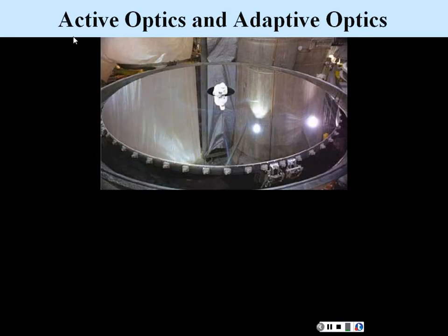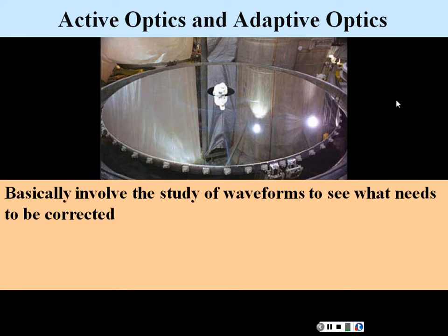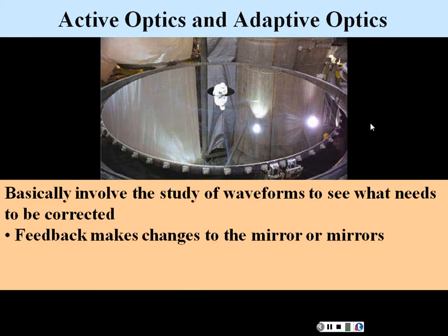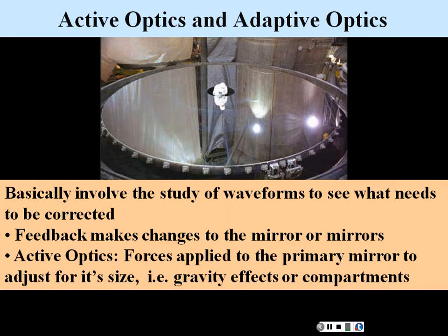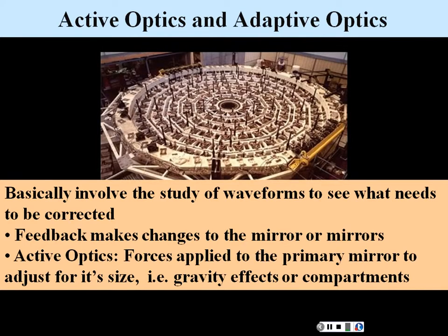Adaptive optics manipulates secondary mirrors and waveforms to account for atmospheric changes. Feedback changes the mirror shape. For active optics, it acts on the primary mirror — little force actuators on the back side of the mirror can move and reshape it from behind. Most of the time when we talk about manipulating waveforms, we're talking about adaptive optics, just manipulating secondary mirrors or the waveforms.